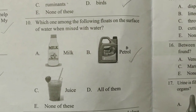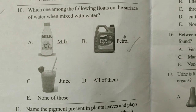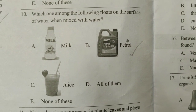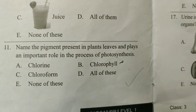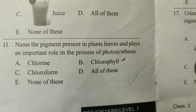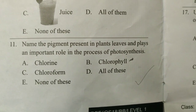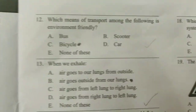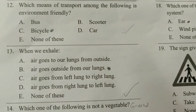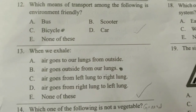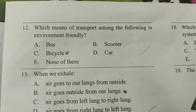Question 10: Which one among the following floats on the surface of water when mixed with water? The answer is B — petrol — and it is from Chapter 5. Question 11: Name the pigment present in plant leaves that plays an important role in the process of photosynthesis. The answer is B, and it is from Chapter 3. Question 12: Which means of transport among the following is environment friendly? The answer is C — bicycle — from Chapter 7, given on page number 78 of the study material.